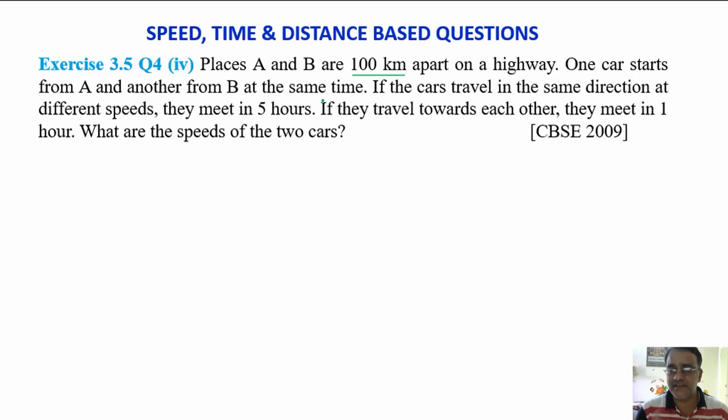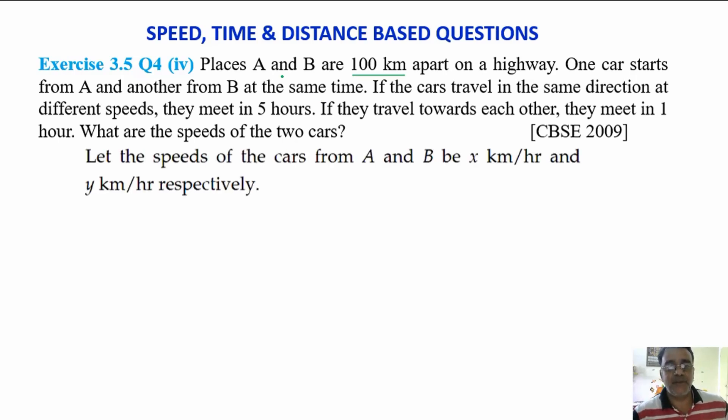Here two cases are there. First case, when they travel in the same direction. And the second case, when they travel in the opposite direction towards each other. We will start with the speed of car at A be x and at B be y km per hour. First step.